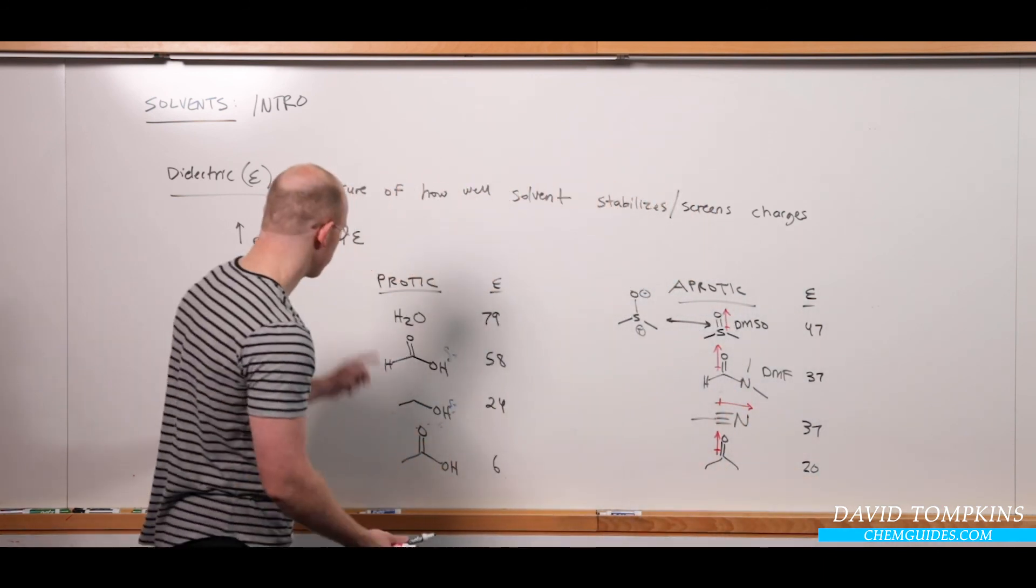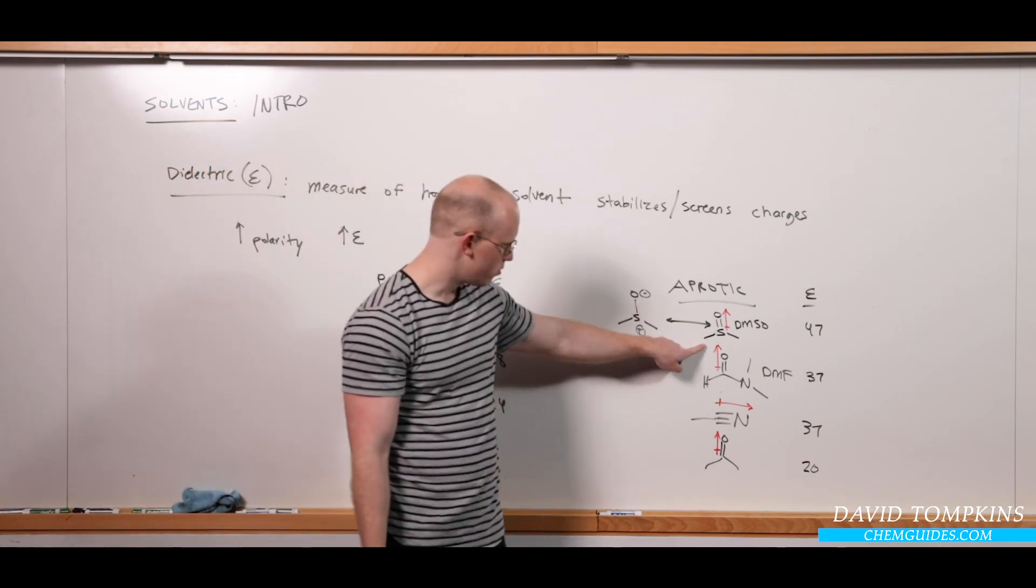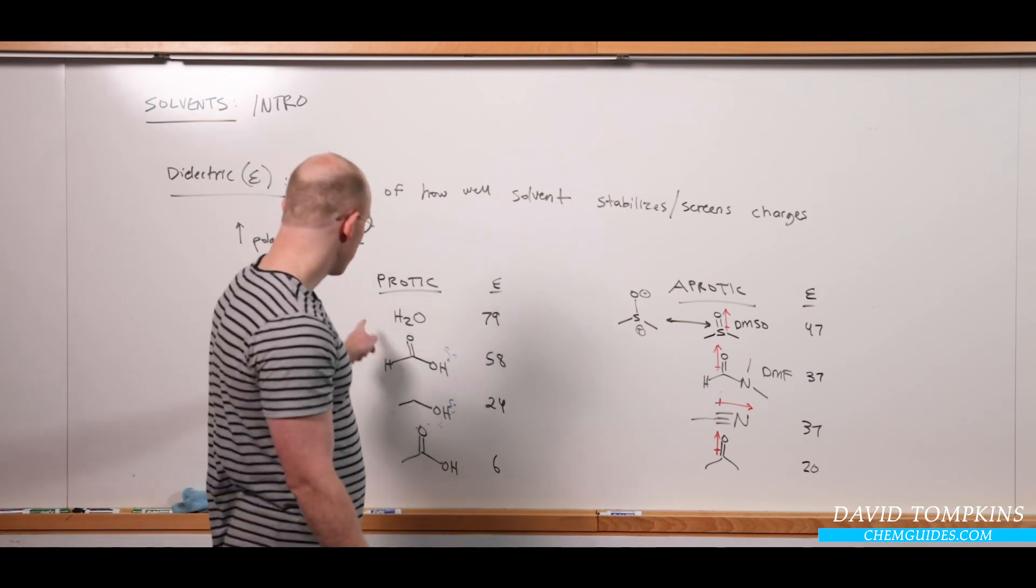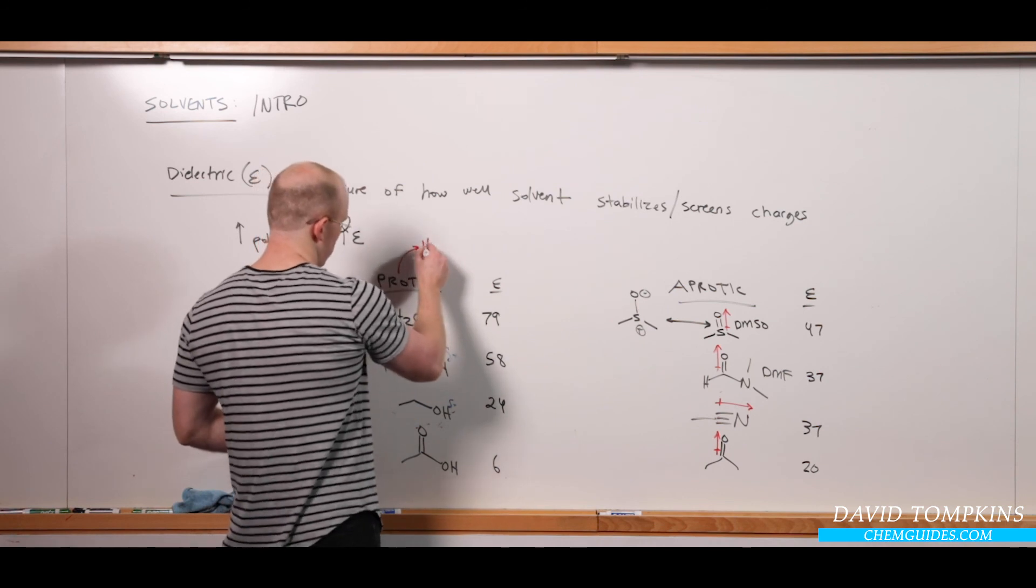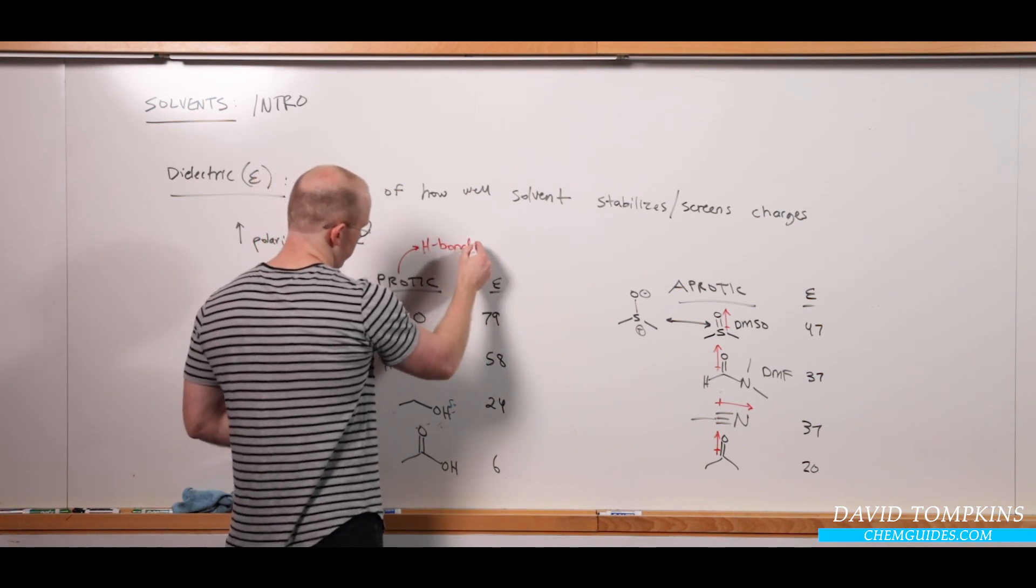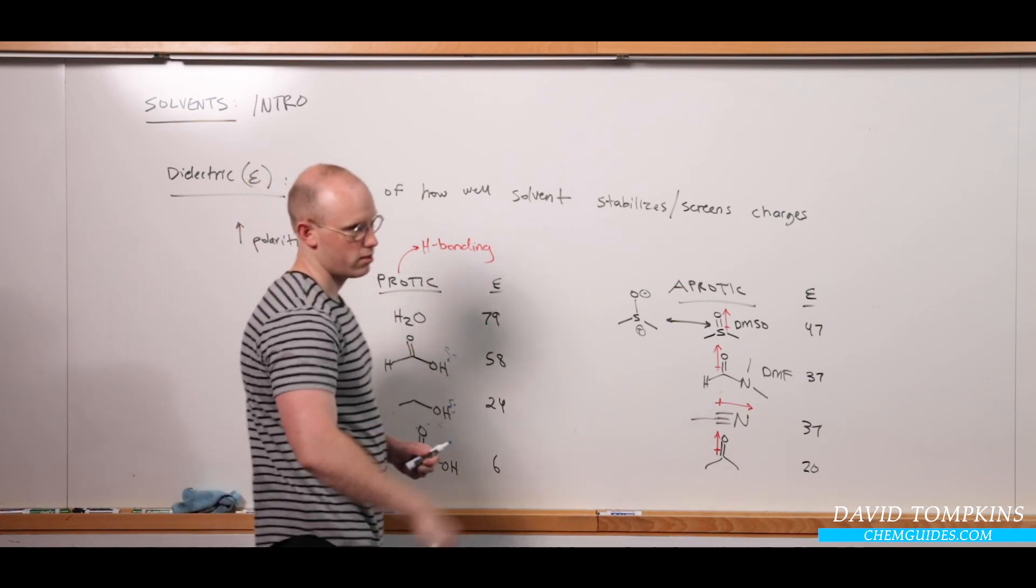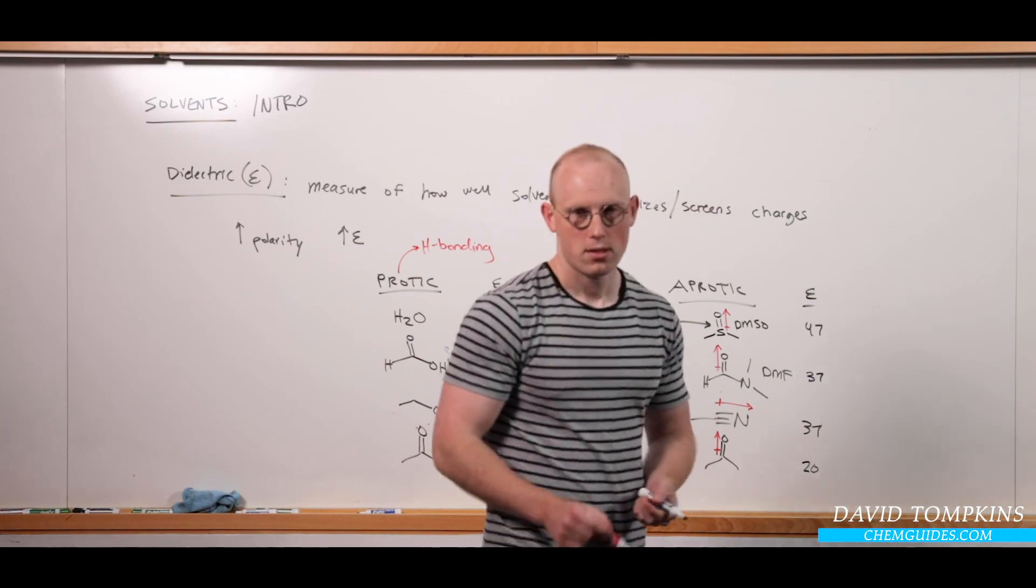So, it's not always true that protic is more polar in terms of dielectric value. DMSO, the aprotic one, is more polar than ethanol and acetic acid. But they have different characteristics in that these are hydrogen bonding. Because that very electron-poor proton is able to reach out and interact with an anion.